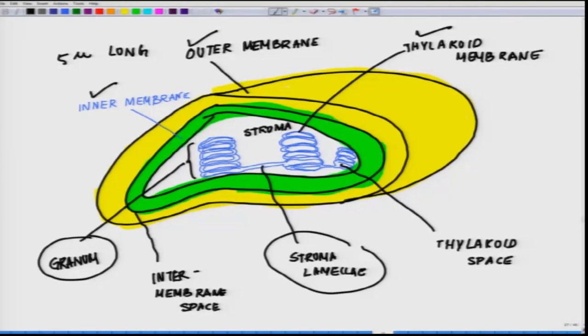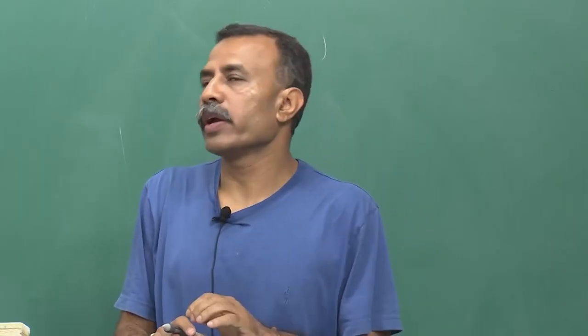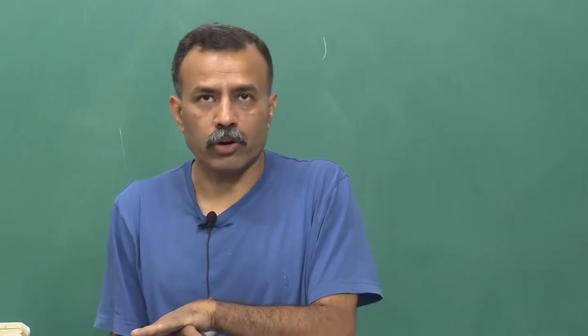So, one of the space is the intermembranous space which is between the two membrane outer membrane. Then you have stroma which is this space. And then you have a thylakoid space which is out here. In developing chloroplast, the thylakoid arise from invagination of the inner membrane. And so, they are analogous to the mitochondrial structure where you see structures like cristae in the mitochondria.